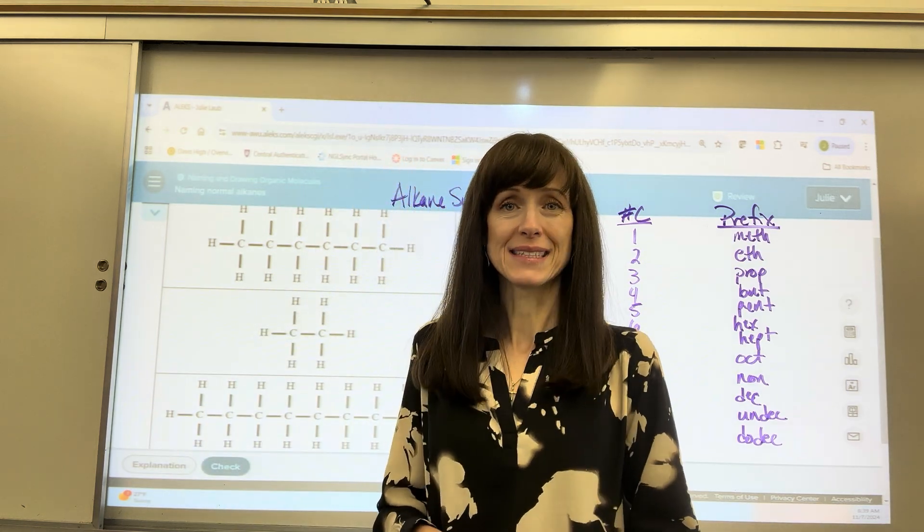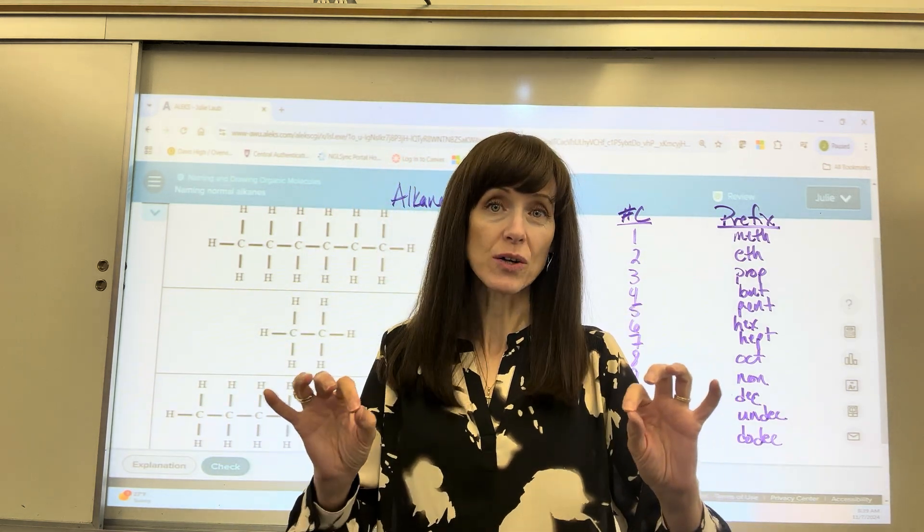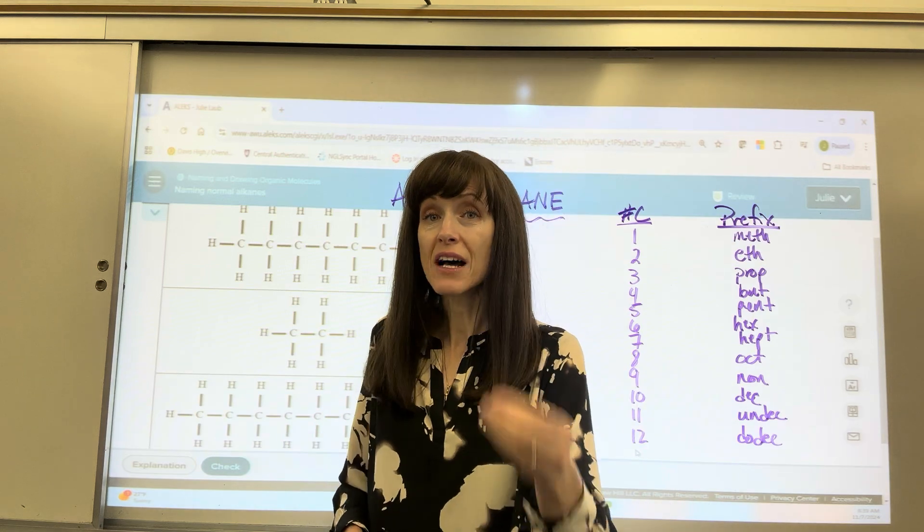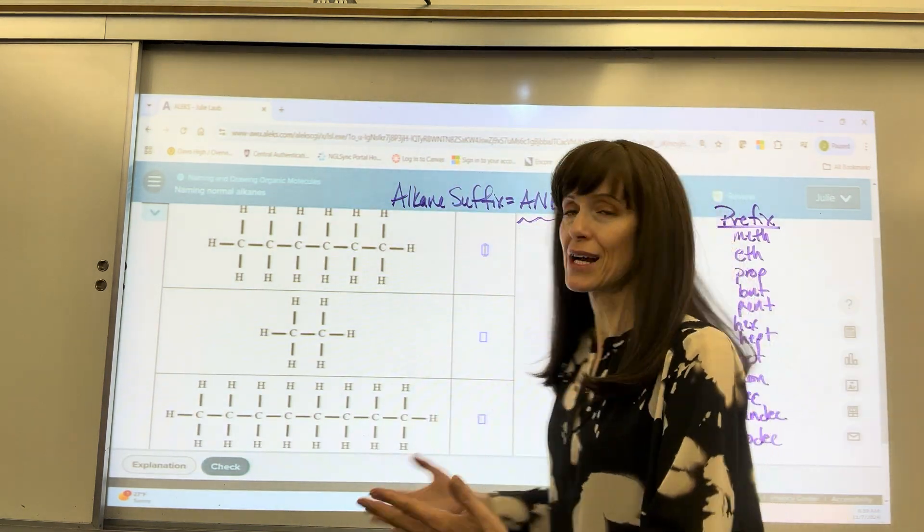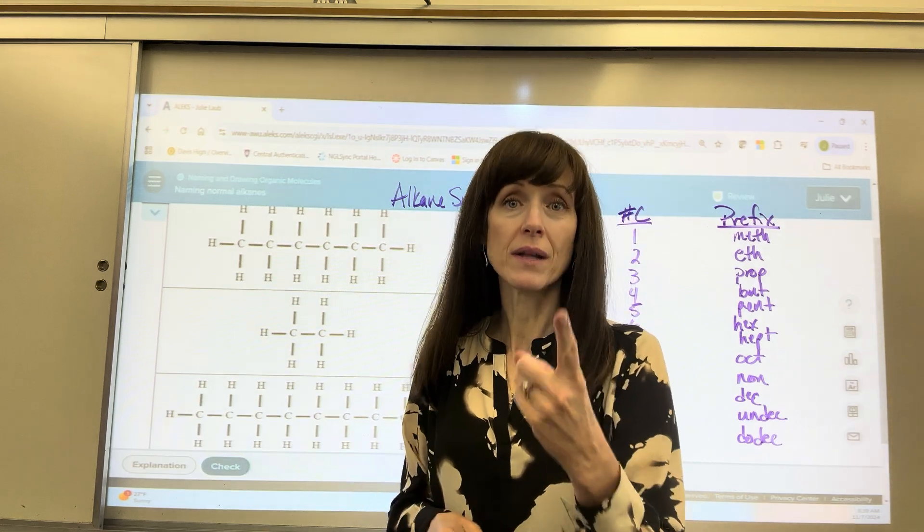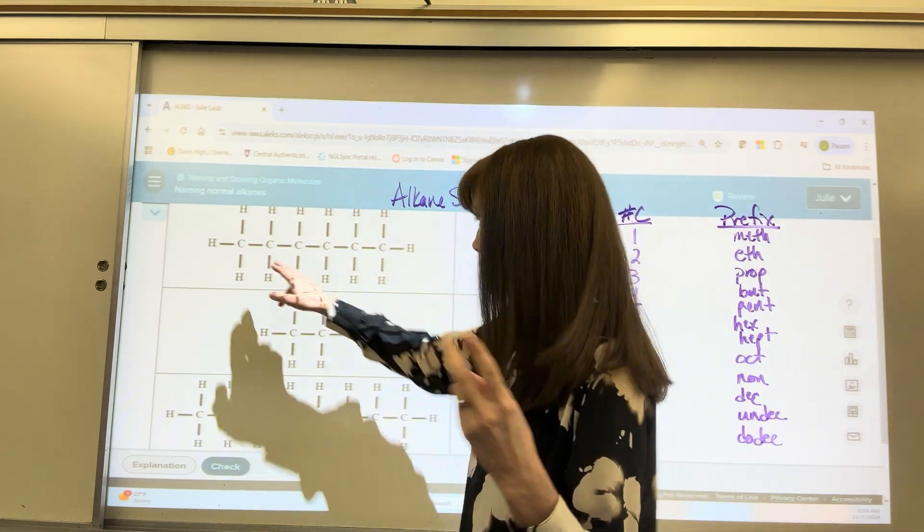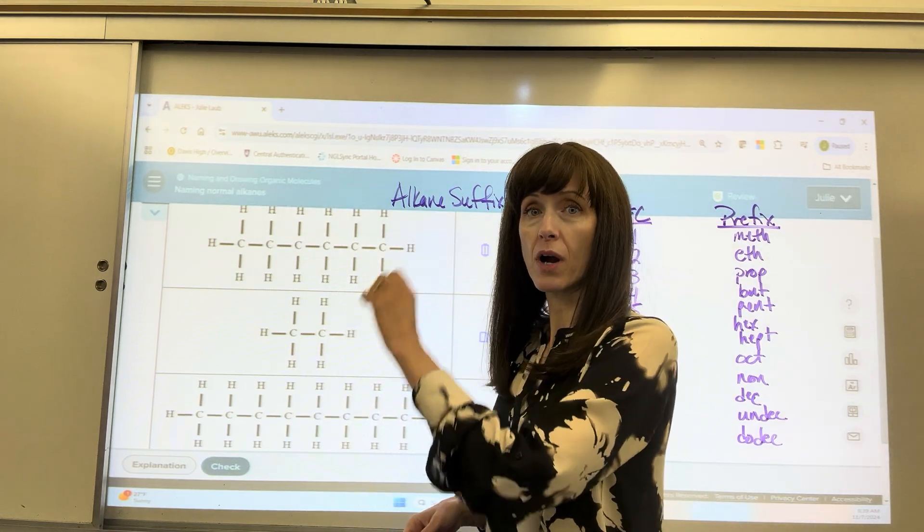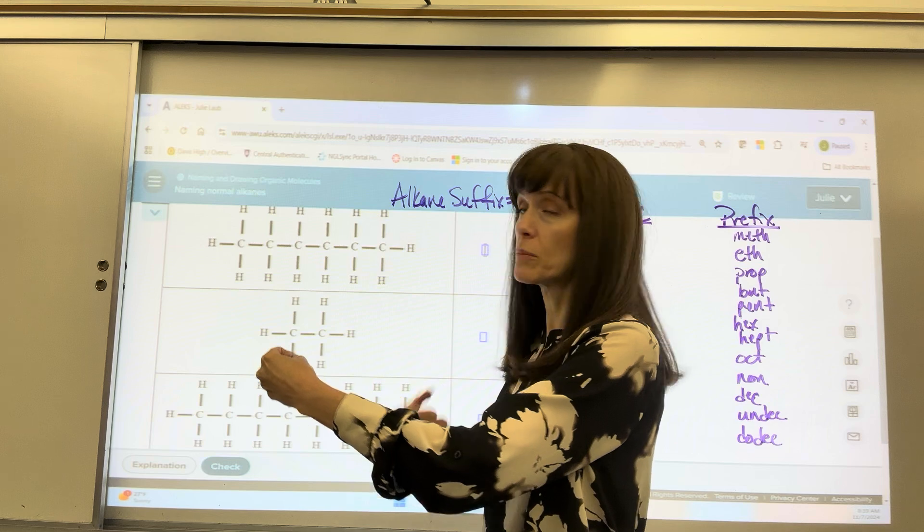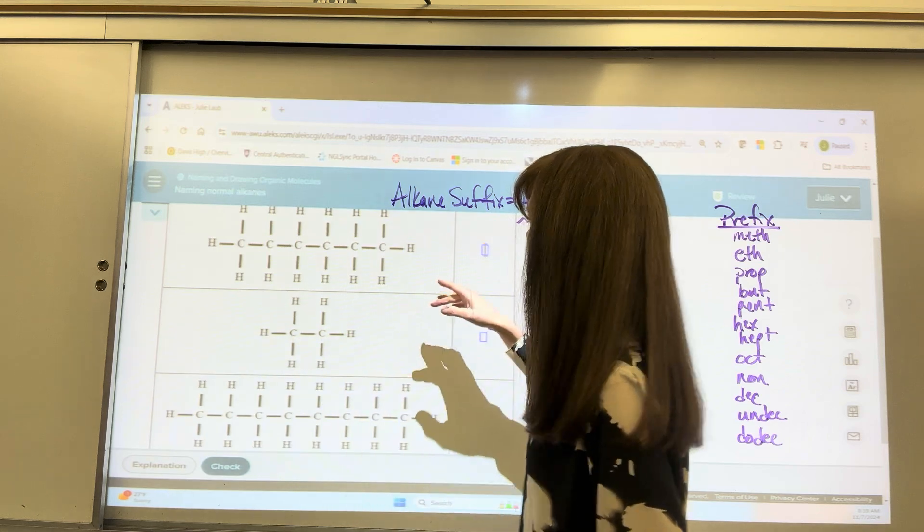A reminder, on our alkanes, that means that all the carbons are single bonded to one another. The suffix, the ending, is always A-N-E. So here's how you do it. You simply, number one, count the number of carbons. Number two, confirm that they're all single bonded, and then we put this together. Number of carbons prefix, all single bonded suffix. We will have, for example,